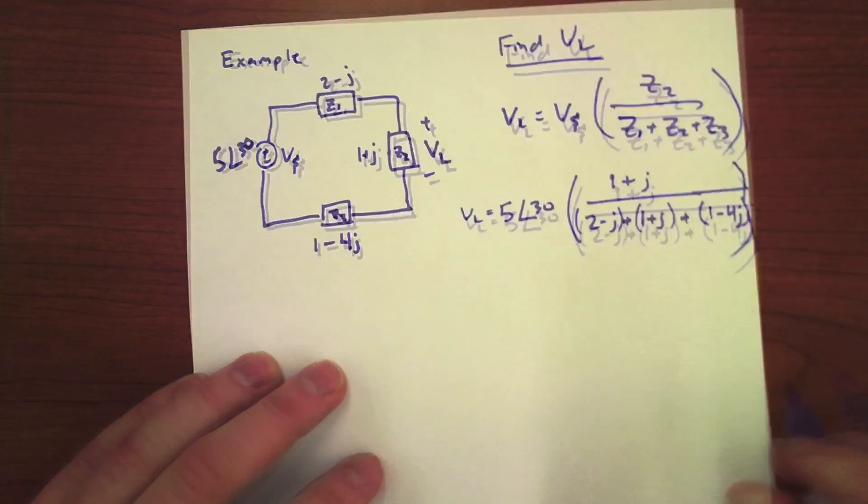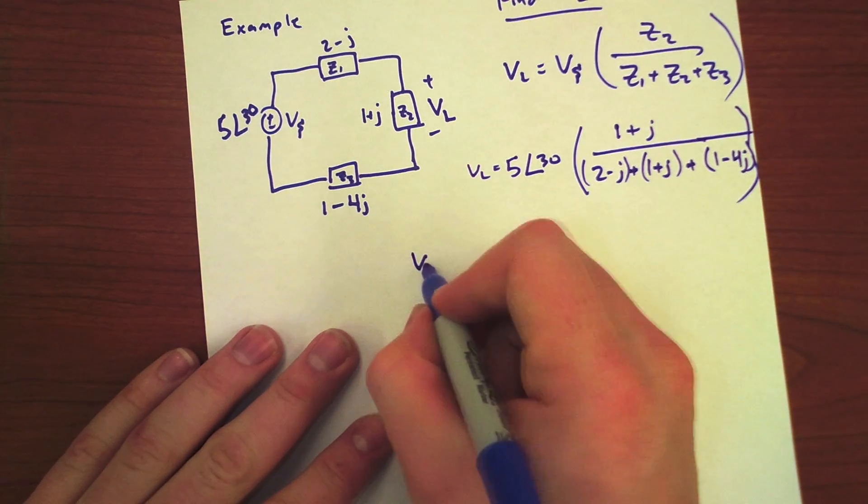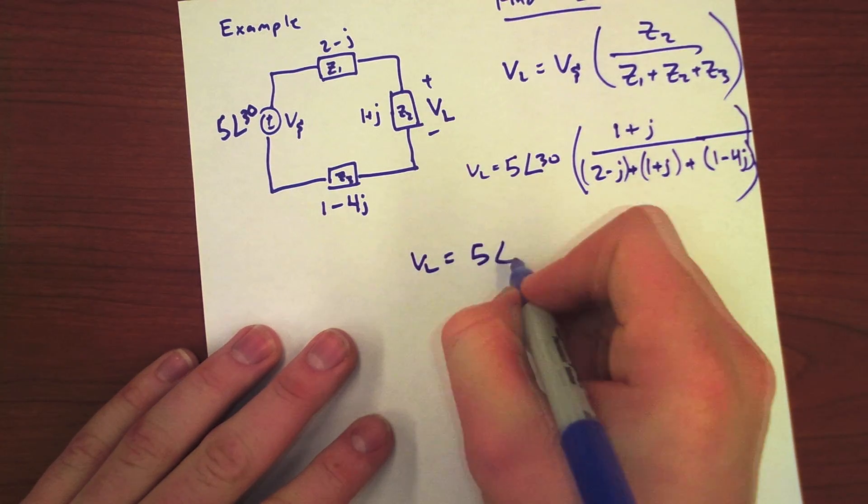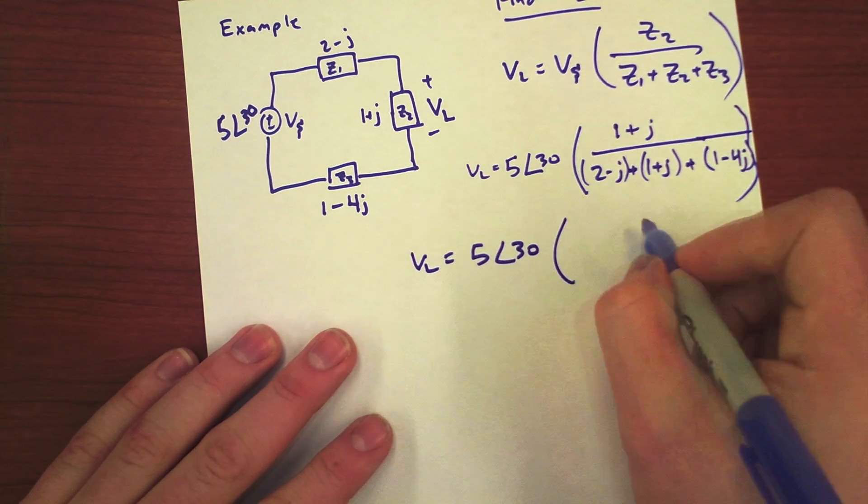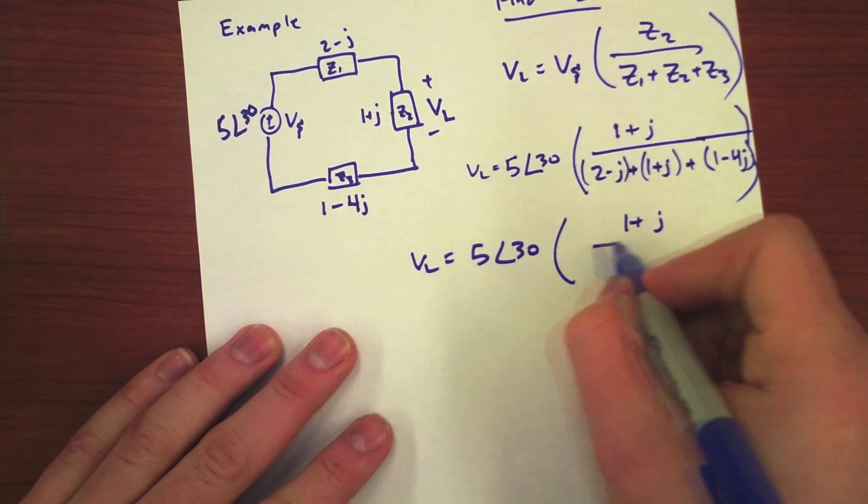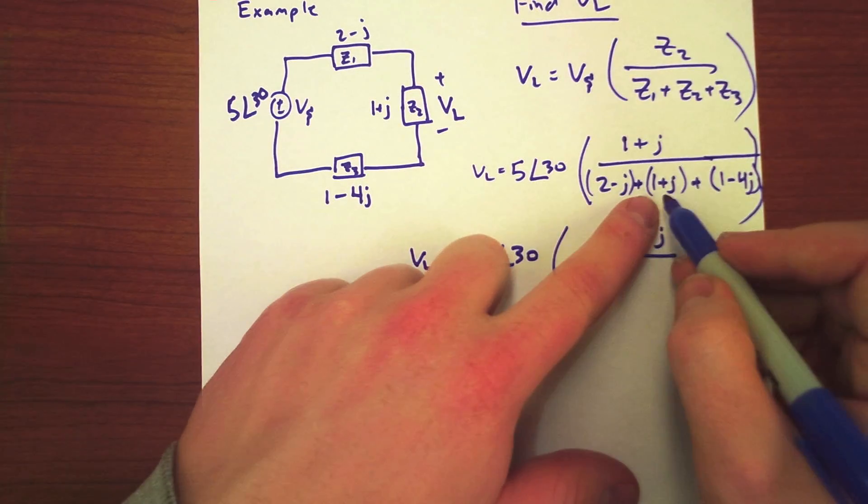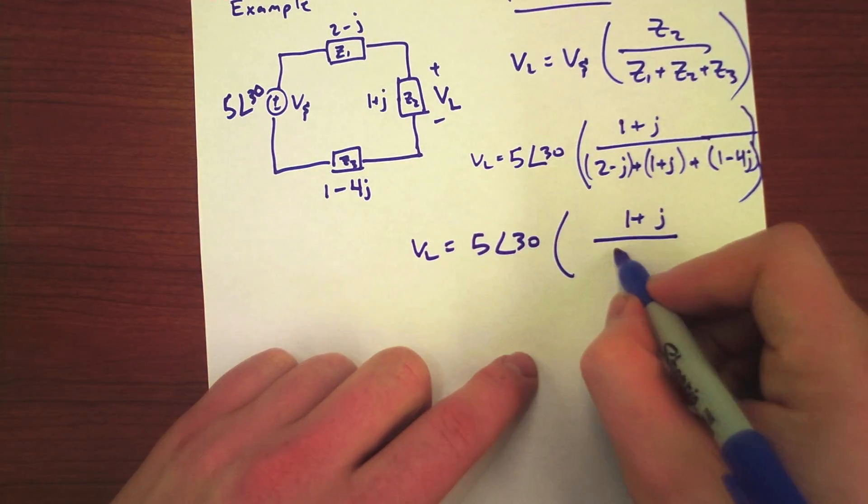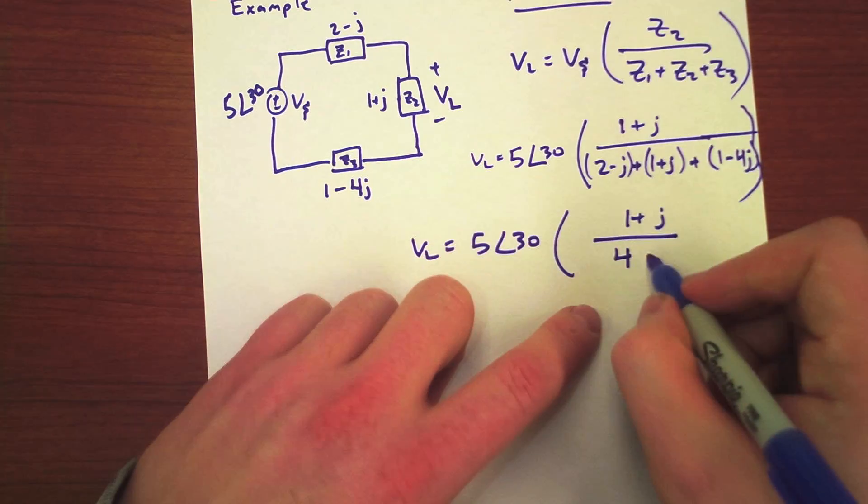Let's simplify that. VL equals 5 angle 30 times 1 plus j divided by 4 minus 4j.